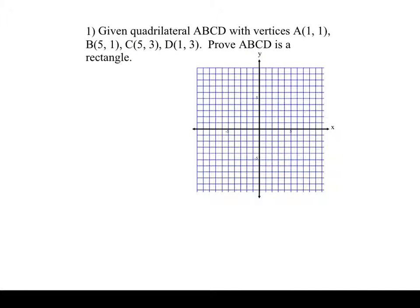Here's our first example. Given quadrilateral ABCD with vertices given, prove that it's a rectangle. I'm going to pause the video and let you work on graphing it, labeling it, and then writing your distance formula if that's what you're using. Always write your formulas at the top of the paper — whatever formulas you're going to use for the proof. You need to write your formulas once, then show all the work and make conclusions during your proof.